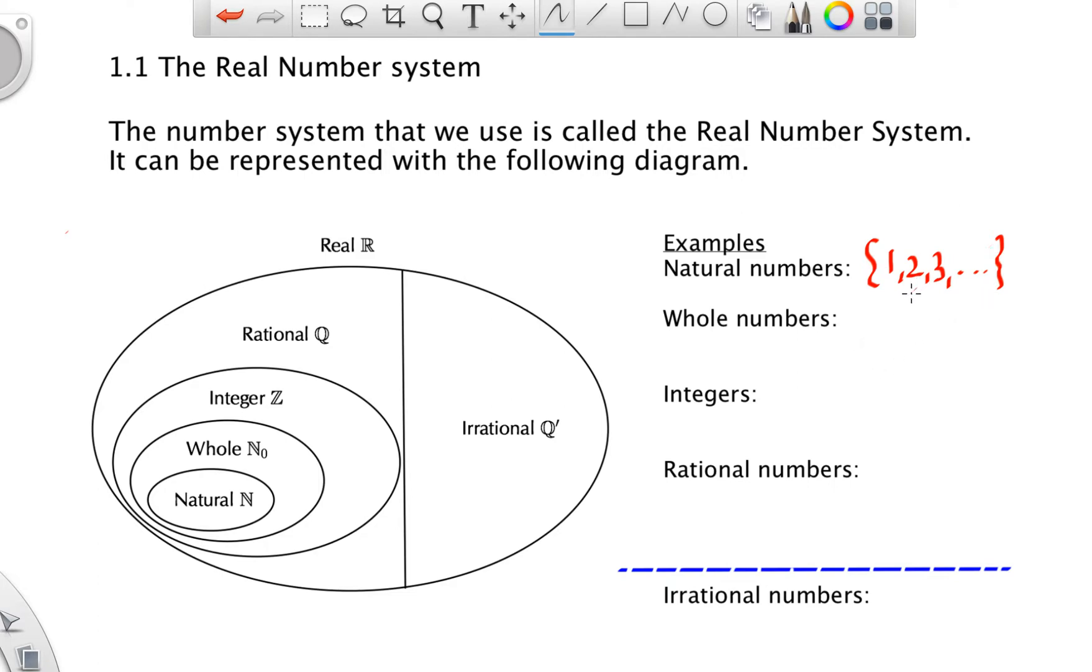All of the natural numbers are also part of the whole numbers. And you can see that over here, the natural numbers is completely inside the whole numbers set. The whole numbers just adds the number zero to this set.